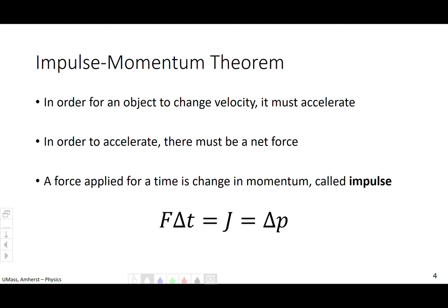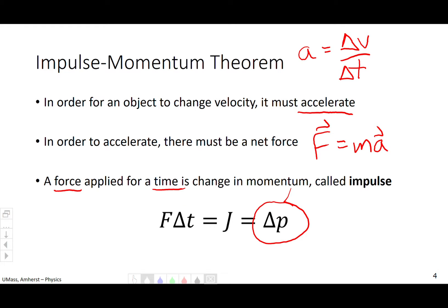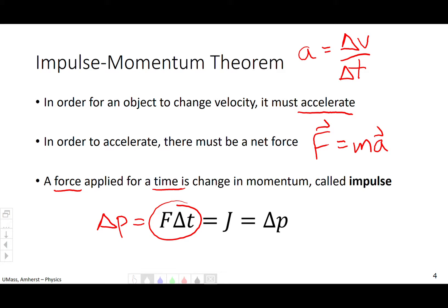There is the impulse-momentum theorem. In order for an object to change velocity, it must accelerate. We know that acceleration is change in velocity over change in time. In order for an object to accelerate, there must be a net force — this is Newton's second law. In order for acceleration to be non-zero, force also has to be non-zero. So we're going to define a quantity of force applied for a time. Force multiplied by time will give you a change in momentum, which we define as impulse with the letter J. All you have to know is that force multiplied by time is change in momentum — applying a force has to be over a particular amount of time.